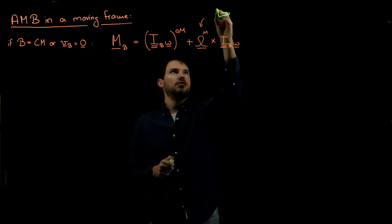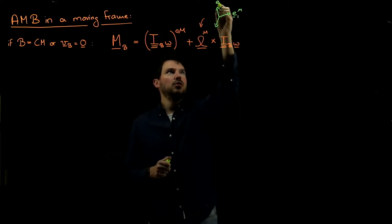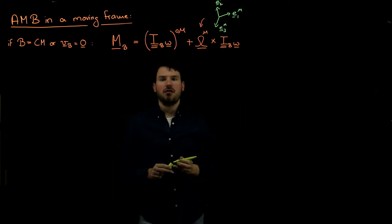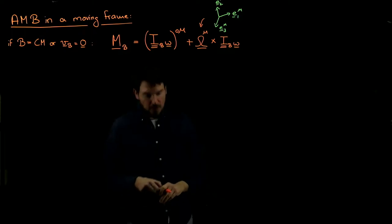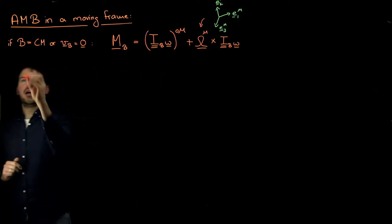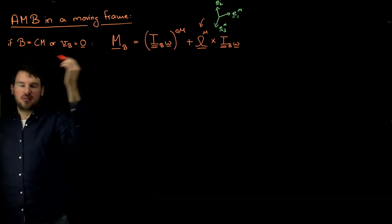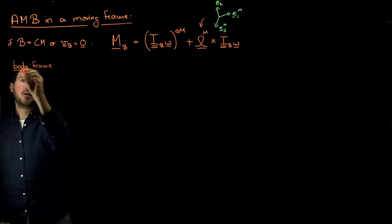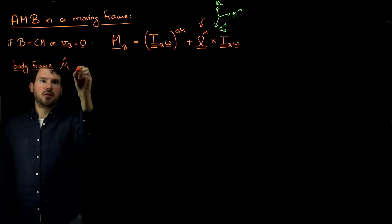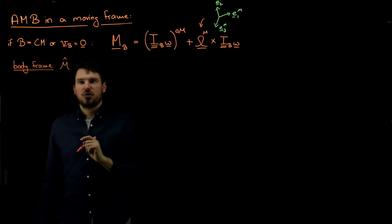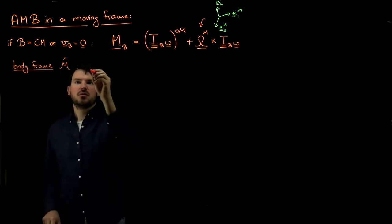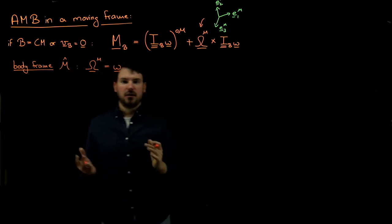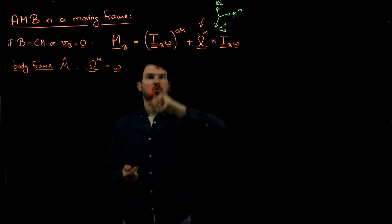Now we discussed one important special frame. The M-frame is a moving one, and the special one we highlighted is what we call the body frame — we call it M-hat because it's special. This frame satisfies two conditions. First, it rotates with the body of interest, meaning the angular velocity of the frame is the same as the angular velocity of the body we're considering, so these two are the same, simplifying things.